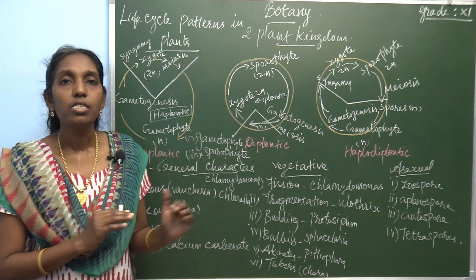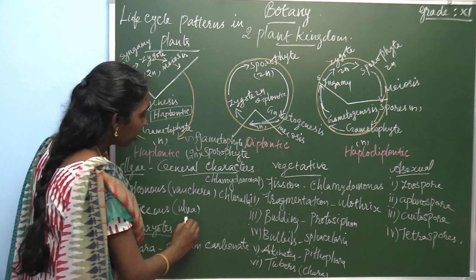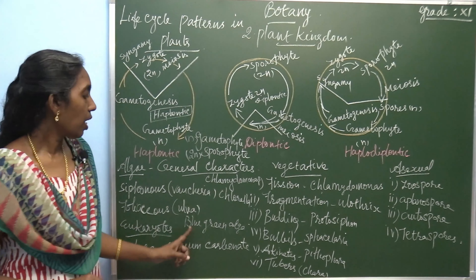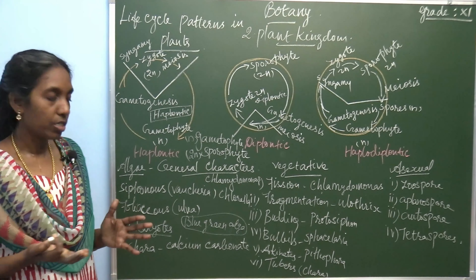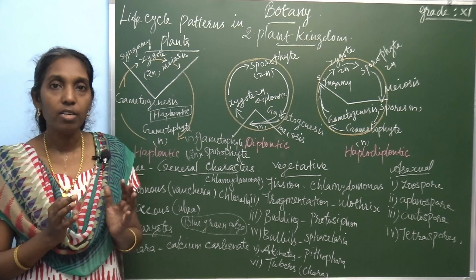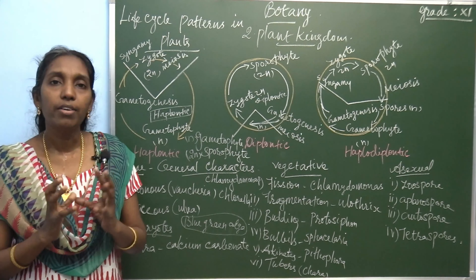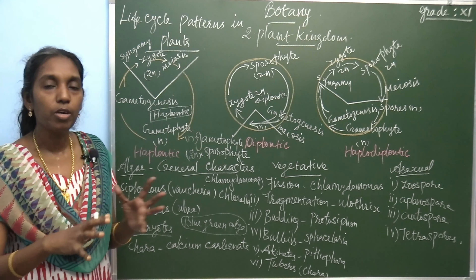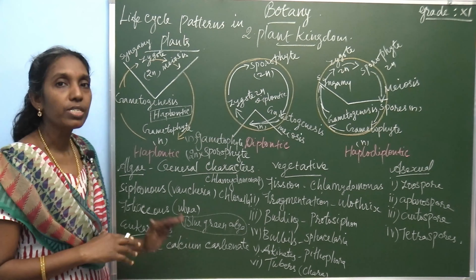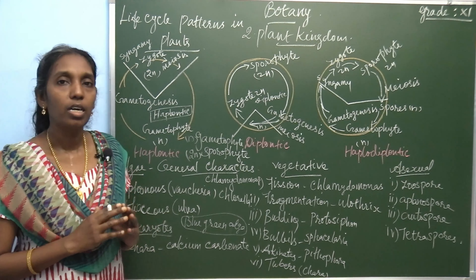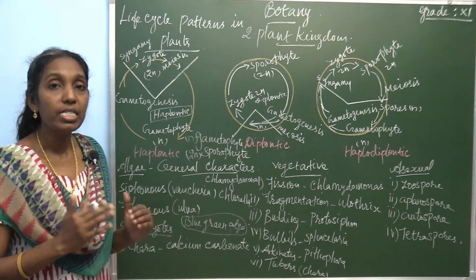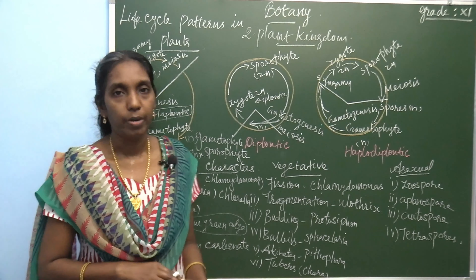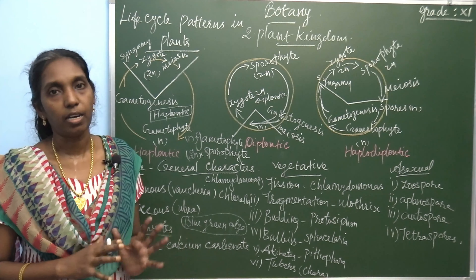The second characteristic: Algae is eukaryotic, except blue-green Algae. Eukaryotic cells possess a well-defined nucleus surrounded by cell organelles like chloroplast, mitochondria, Golgi bodies, and endoplasmic reticulum. The cell wall is made up of cellulose and hemicellulose. In Chara, calcium carbonate is also present.